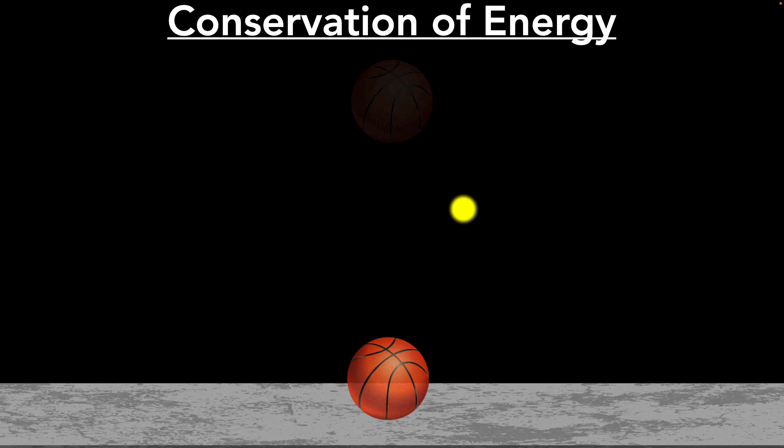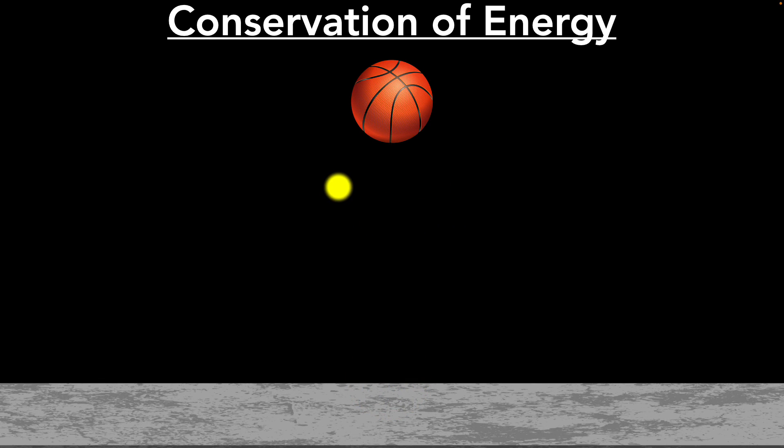So what is conservation of energy? Well, the principle says that if you take any system, for example, the system made of this basketball and the earth, and no energy is entering or exiting that system, then the total energy within it stays the same. That's it. That's the idea.